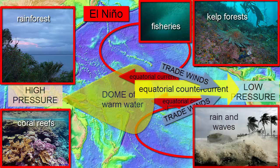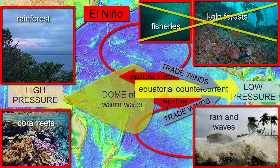Upwelling stops and with it the nutrients that sustain the food web in this area. Without the autotrophs at the base of the food chain, the heterotrophs migrate to find new food sources or die. In the western Pacific, the rainforests lose much of their water and suffer droughts and fires.